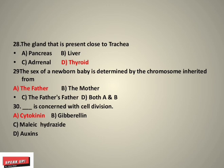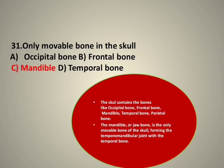The sex of a newborn baby is determined by the chromosome inherited from the father, not the mother. The process concerned with cell division is cytokinesis. The only movable bone in the skull is the mandible.